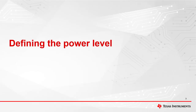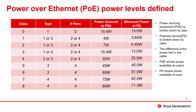Step 1 in the design procedure is to define the power level. Power over Ethernet power levels is actually more complicated than it might first appear. Before we begin, I want to define some terms that will be used throughout the rest of this presentation. First is Power Sourcing Equipment, shortened to PSE — this is the equipment that sends power through an Ethernet cable. Next is Power Device, or PD — this is the device that will receive the power through the Ethernet cable.